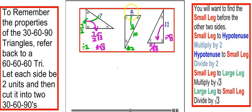Over here, we have the small leg to the long leg. We're going to multiply by radical 3. Notice this other problem. We had to divide by radical 3.